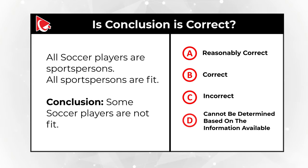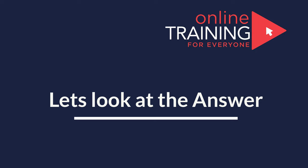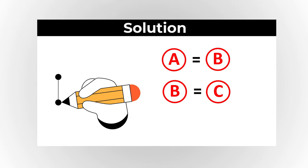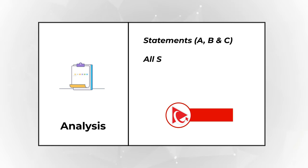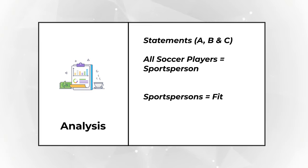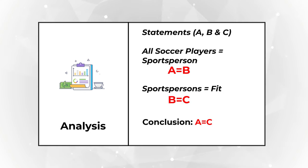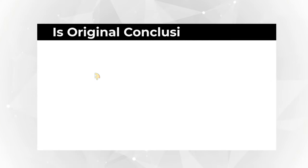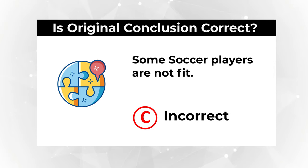Give yourself a little bit of time. In a logical world, if A equals B and B equals C, then A equals C as well. All soccer players are sportspersons is A equals B, and all sportspersons are fit is B equals C. Based on those two statements, A equals C — meaning all soccer players are fit. Our question asks if some soccer players are not fit. Based on the information provided, it is not correct. So the correct choice here is choice C, incorrect. Because the correct answer, based on the information we have, is all soccer players are fit.